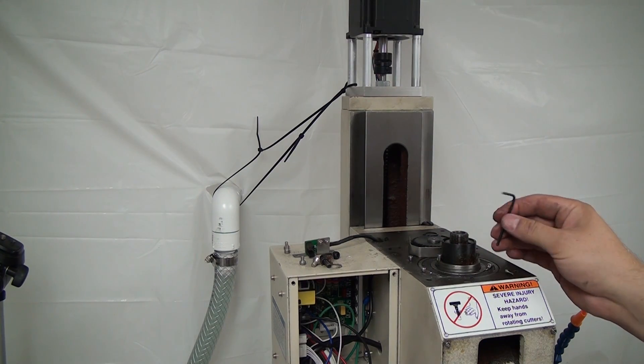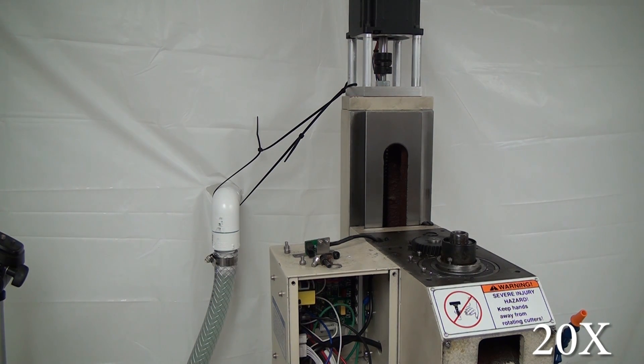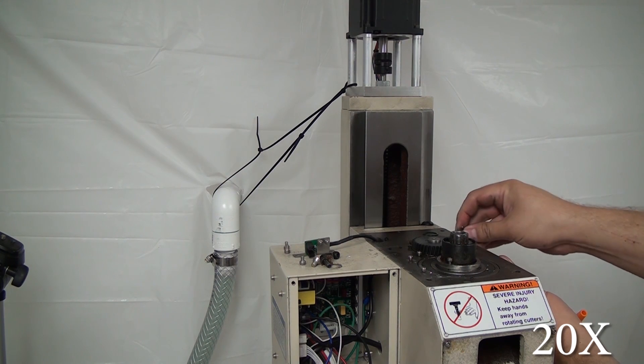So the next thing we do is move to the second shaft and you saw me pull another snap ring and then this little shield.